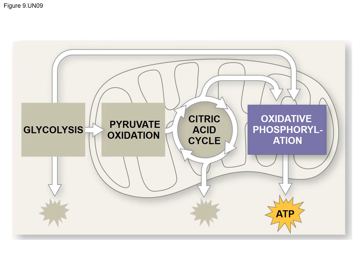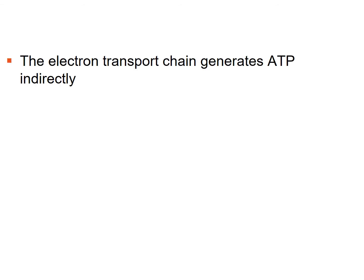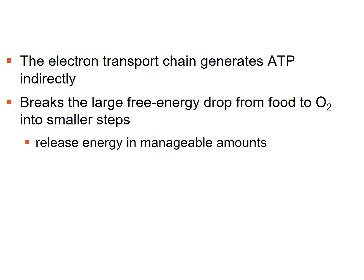The electron transport chain generates ATP indirectly. It does so in steps — a series of small steps rather than all at once. The electrons are passed from a higher energy level to a lower energy level between the protein complexes embedded in the inner membrane of the mitochondrion, ultimately to oxygen, producing water.